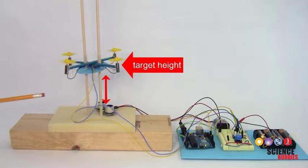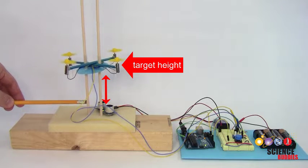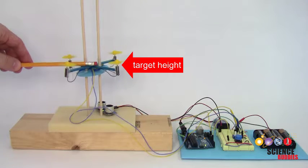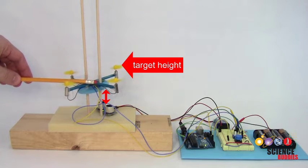The ultrasonic sensor measures the drone's actual height. If the actual height is too low, it increases the speed of the motors, making the drone fly up.